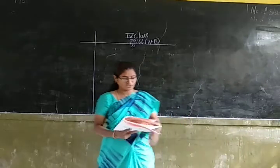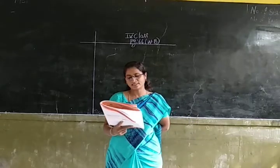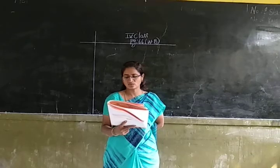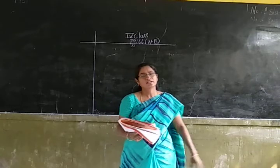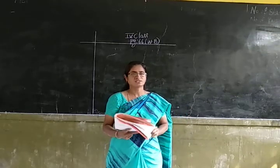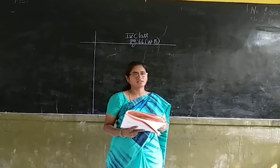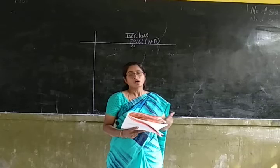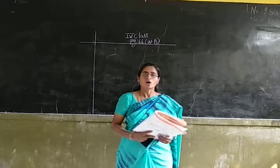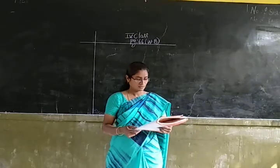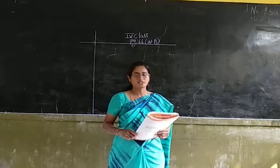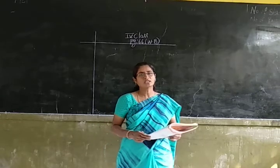Now I am reading the 19th question. A train takes 6 hours to cover 1086 kilometers. How much distance will it cover in 14 hours? A train covers 1086 kilometers in 6 hours. First we have to find out how much distance the train covers in 1 hour, and then how much distance it covers in 14 hours.